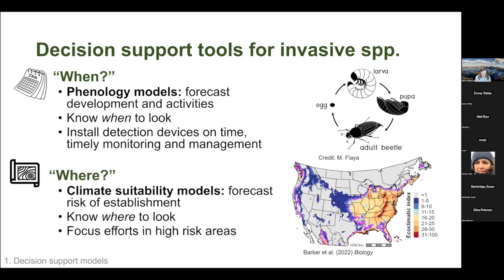Another important type of decision support tool forecasts climate suitability — addressing the question of where to expect a particular species. These tools forecast the risk of establishment based on climate and help us understand where to look. This map shows climate suitability for an invasive fungal pathogen that causes boxwood blight. Red areas are highly suitable; dark blue and gray areas are unsuitable or low suitability. Conducting surveillance in unsuitable areas wastes time and resources, so we can focus efforts in high-risk areas.